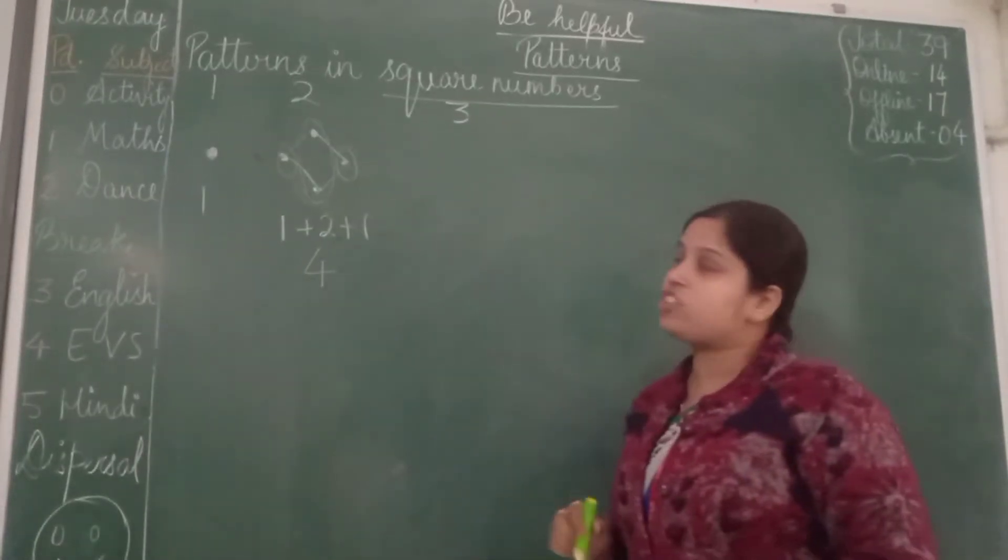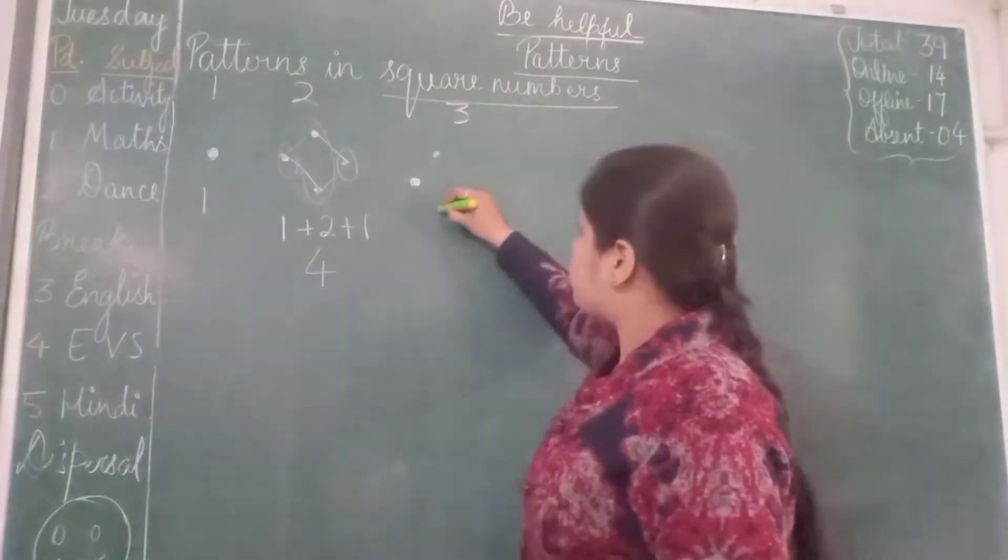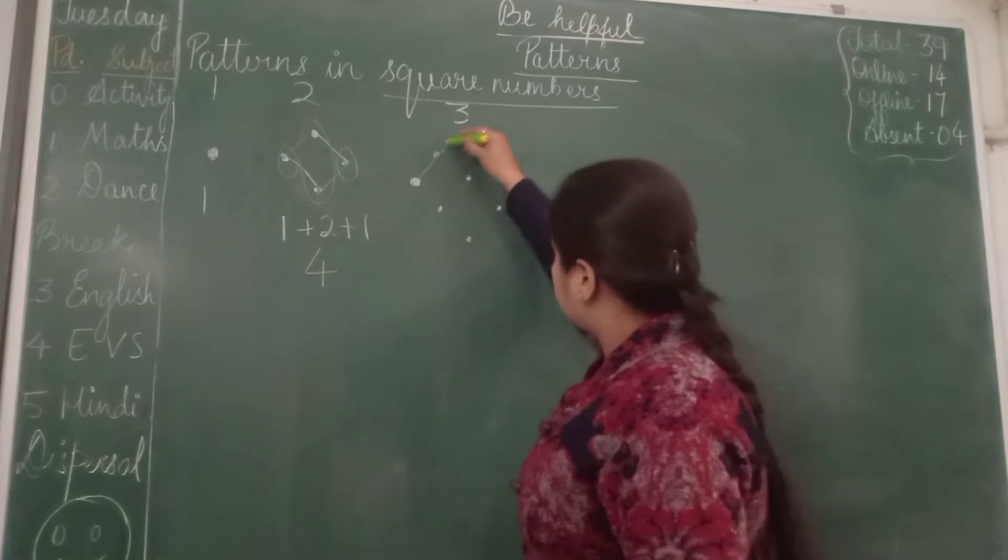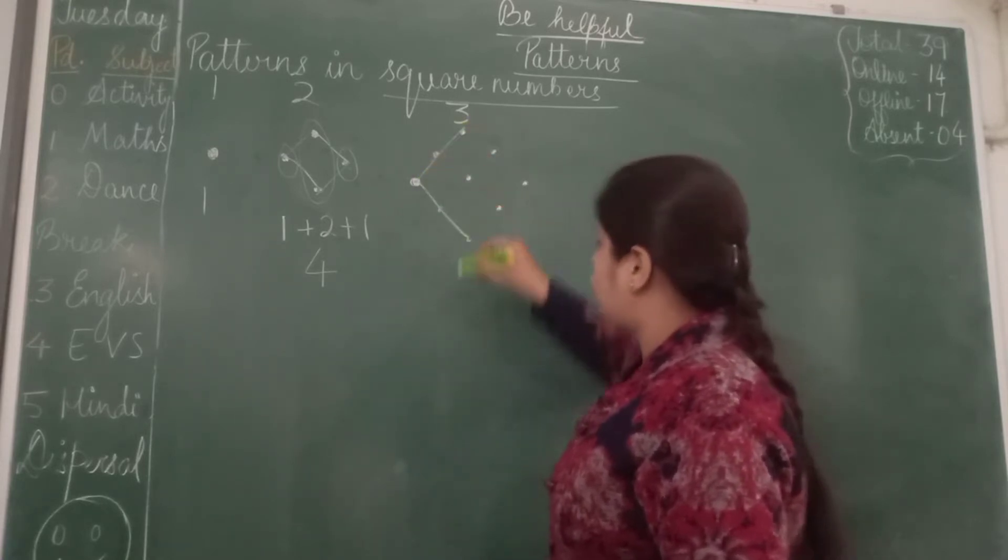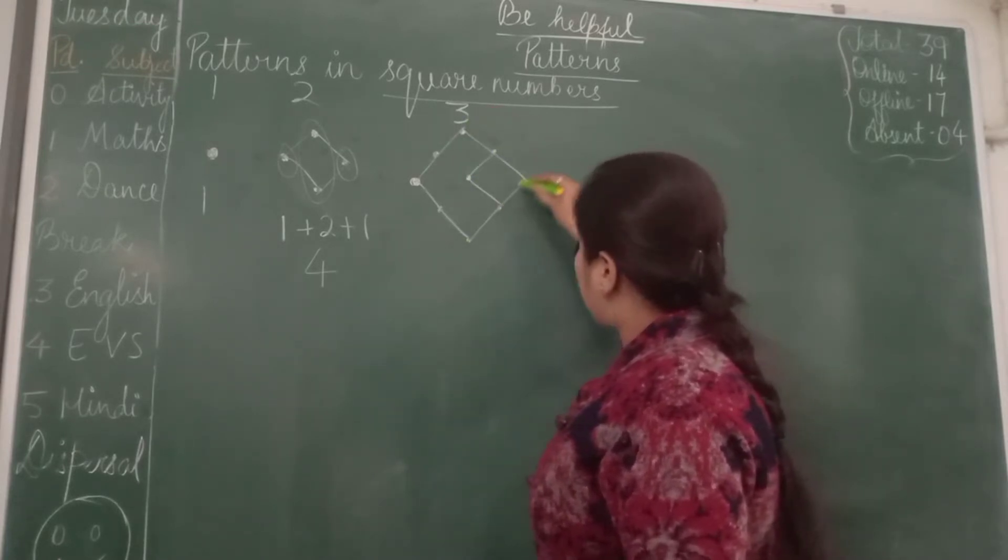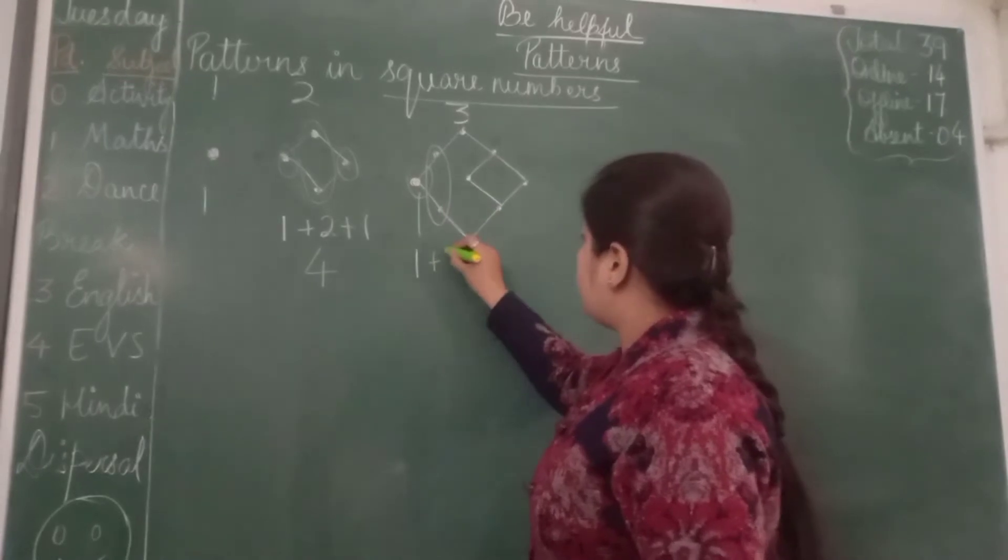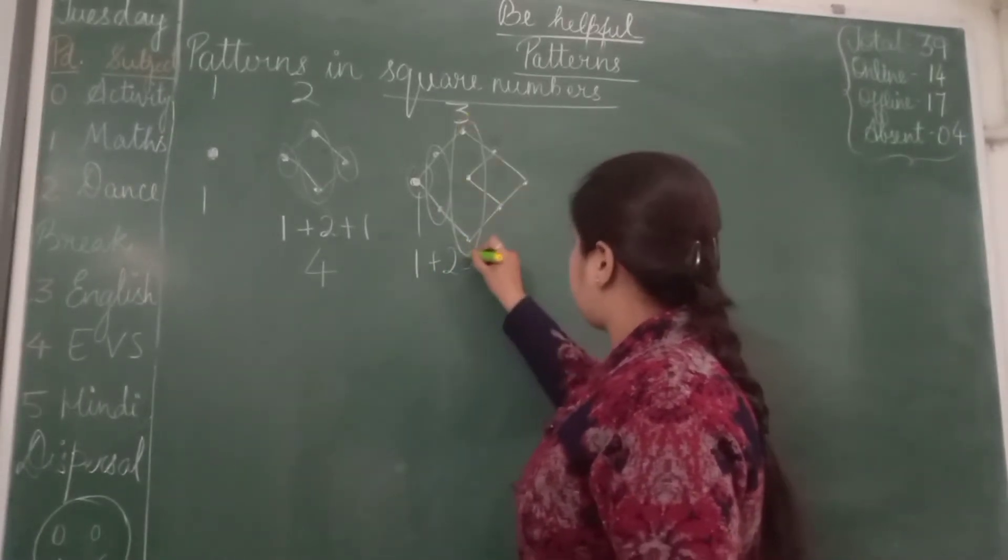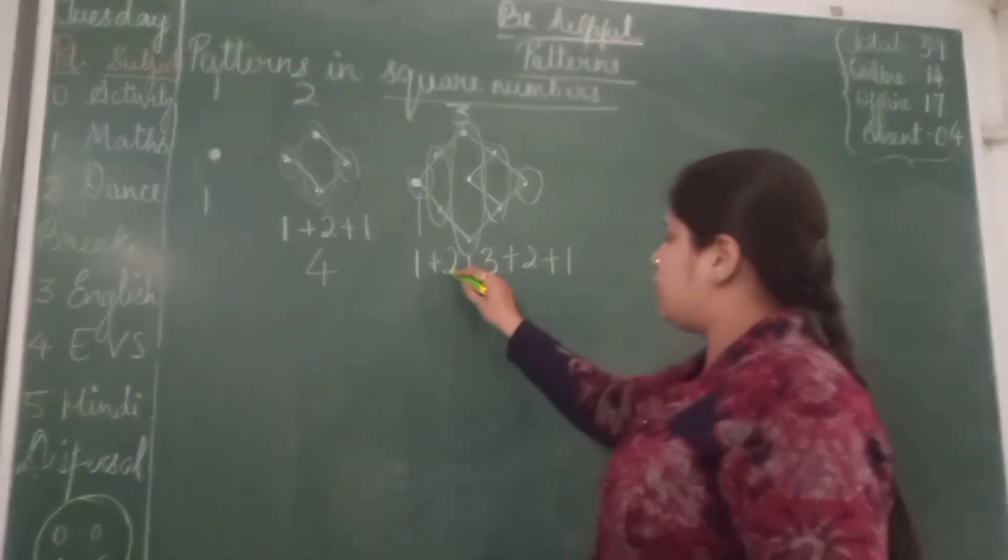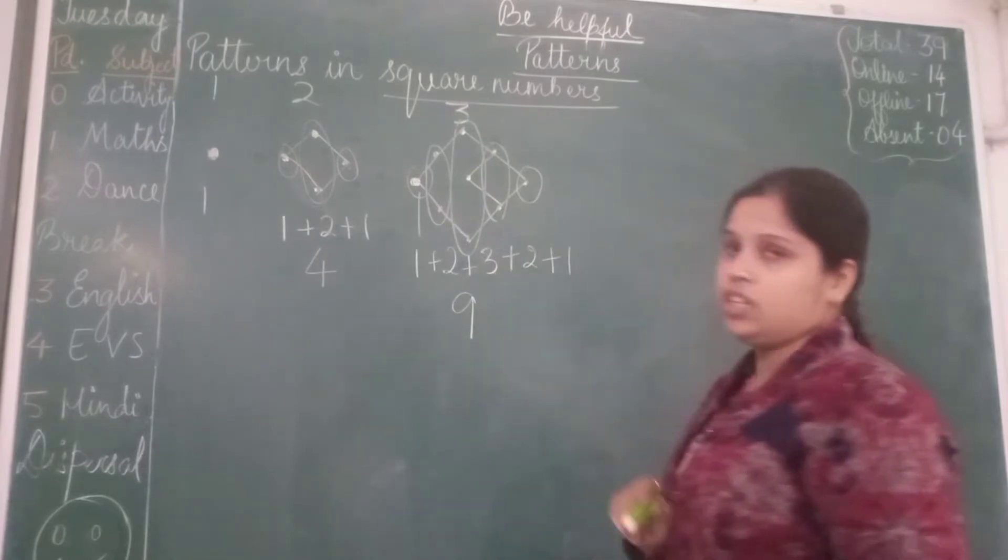Now let's try to find out the square of 3 with this diagram. So first 1 dot, then 2 dots, then 3 dots, again 2 dots and 1 dot. Here 1 dot is 1, here 2 dots are there so 2, in this row 3 dots are there so 3, then again 2 dots, and then here 1 dot. 1 plus 2 is 3, 3 plus 3 is 6, 6 plus 2 is 8, 8 plus 1 is 9. So again we have got the square of 3 is 9.